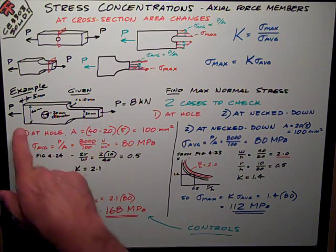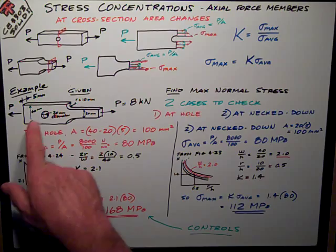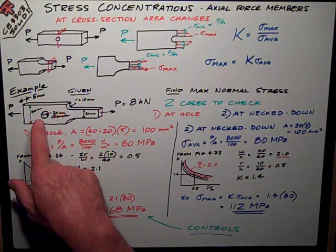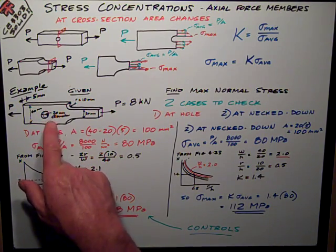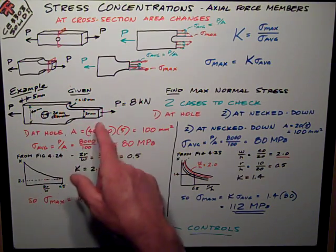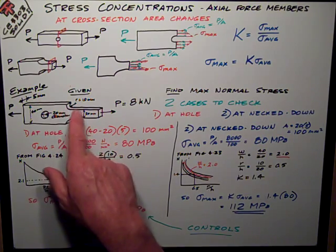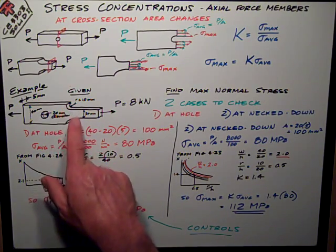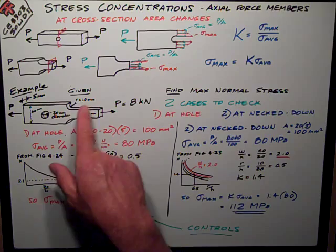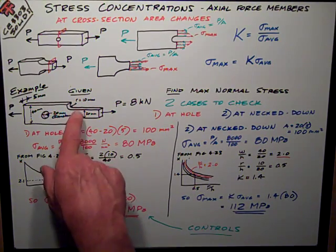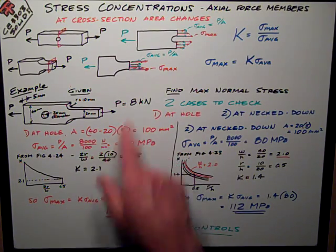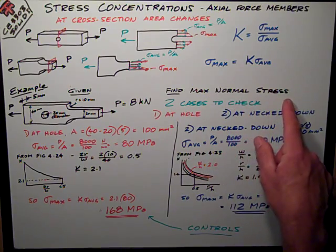Let's look at a simple example that combines both cases. I've got a member dimension that's shown, it's 5 millimeters thick, 40 millimeters wide, 20 millimeter diameter hole in it. It necks down to 20 millimeters wide, still 5 millimeters thick. And I've got a radius for what's called a fillet. The radius of that little curved area that reduces your stress concentrations, the radius of that's 10 millimeters. Let's say we're putting 8 kilonewtons on there as an axial force and we want to find the maximum normal stress.